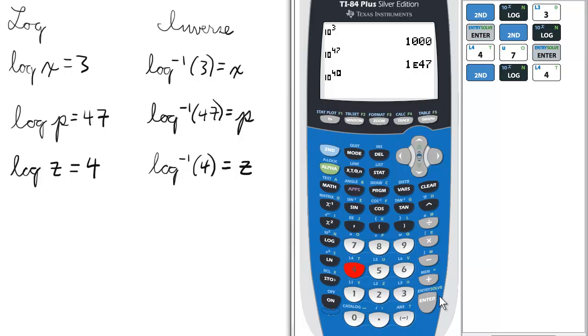Then enter 4. The inverse log of 4 equals z means z is 10,000.